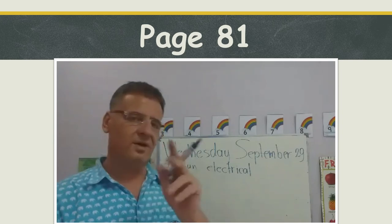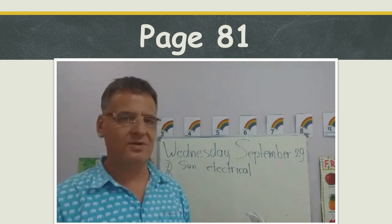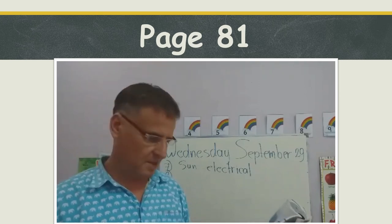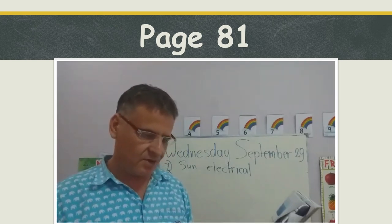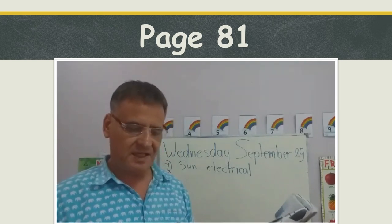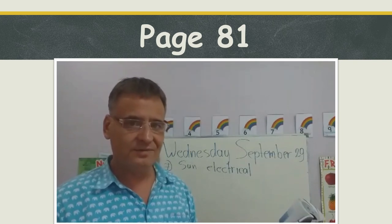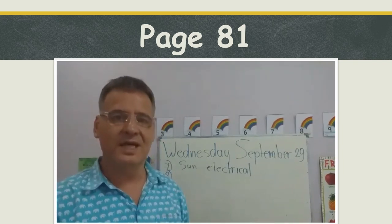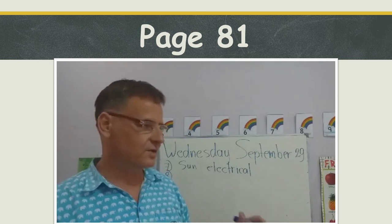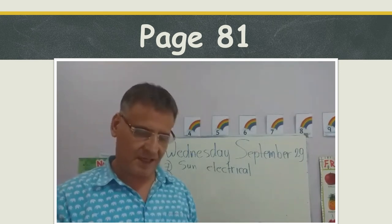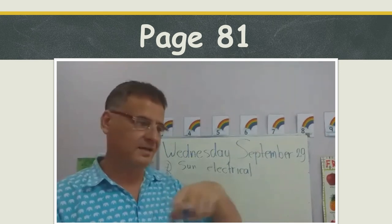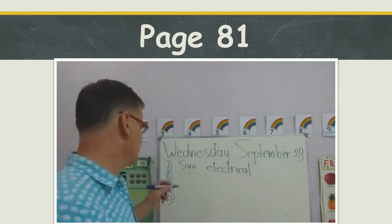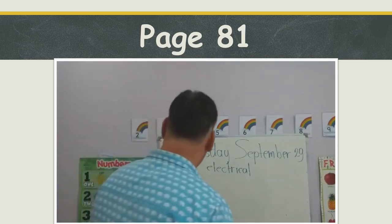Number eight: irons and toasters change electrical energy into heat energy. The toaster uses heat to make bread into toast, and the iron uses heat to make your clothes nice and smooth. So number eight is heat energy.